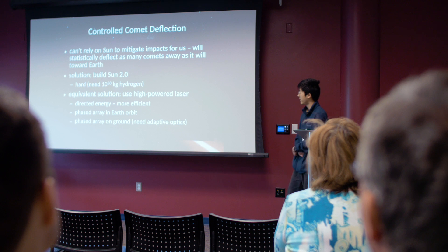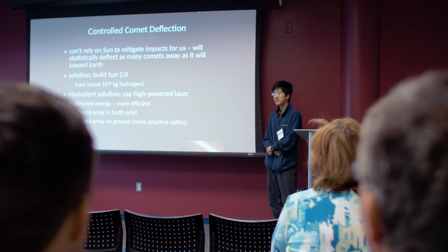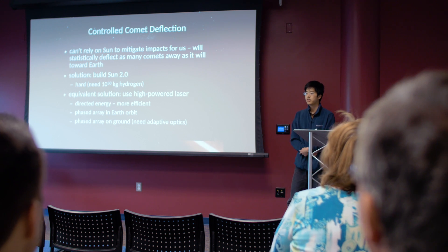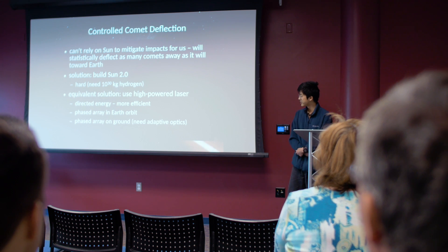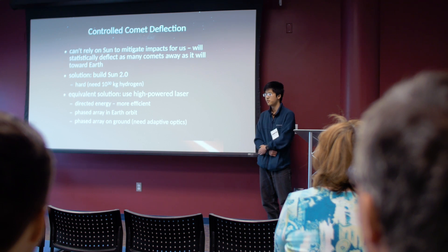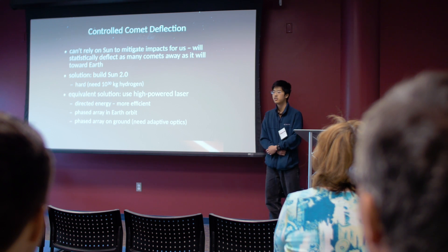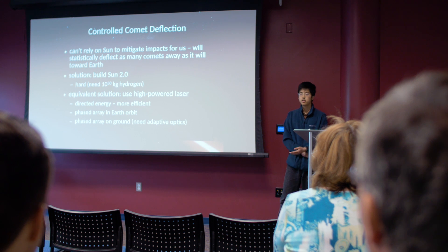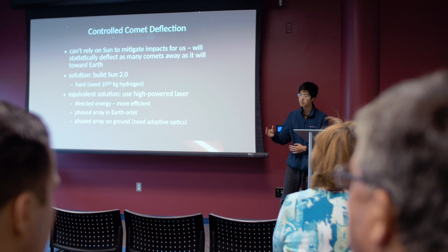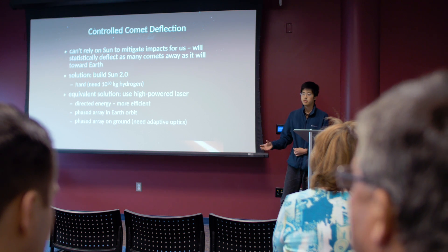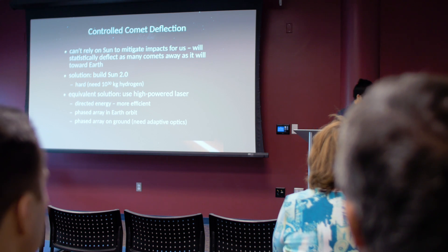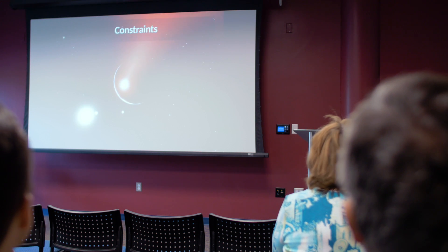So the difficulty with having a laser on the ground is that you have the atmosphere, and the atmosphere distorts your laser beam and spreads out the beam a lot. And so if you have a laser on the ground, you'll need some sort of adaptive optics technology to ensure that, basically just adjusting your beam in such a way to counter the effects of the atmosphere, so that by the time it reaches the comet, it's still very narrow and focused.